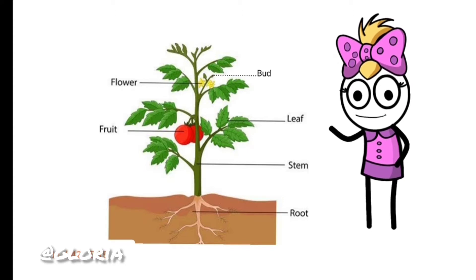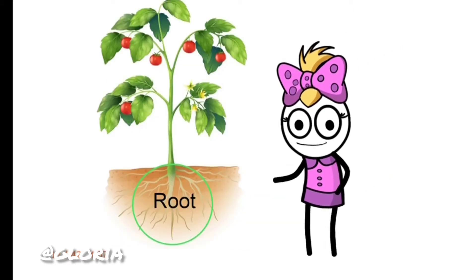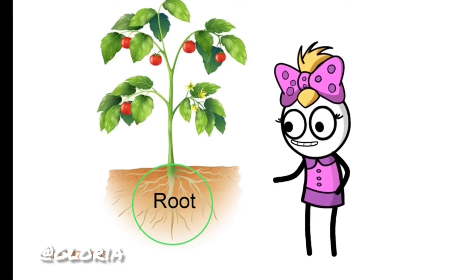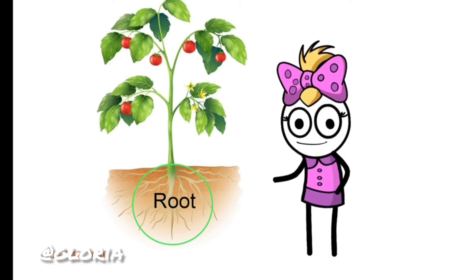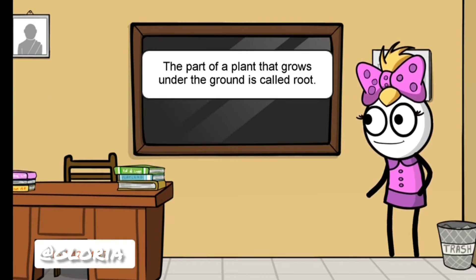We have learnt that the shoot is one main part of the plant. Which is the other main part of the plant that grows under the ground? The part of a plant that grows under the ground is called root. Look onto the board and read: the part of a plant that grows under the ground is called root.